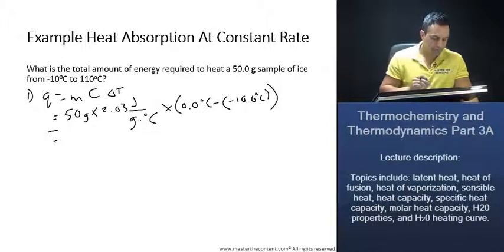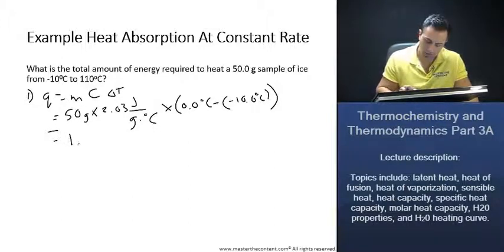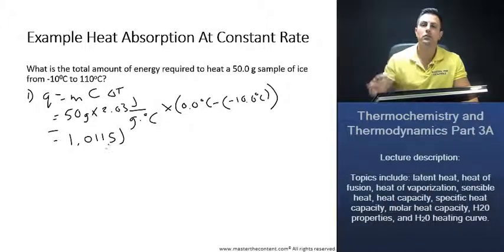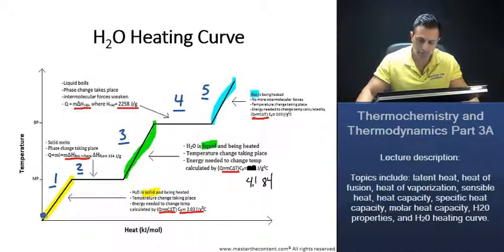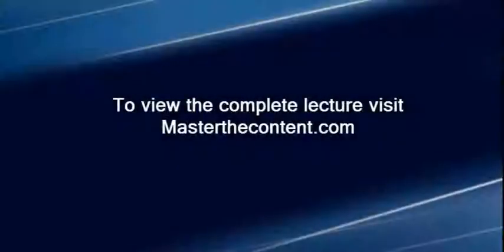Once we actually equate this, we're going to end up with a value of 1015 joules. Let's go back to our heating curve for just a second. So we were about here, and now we're here.